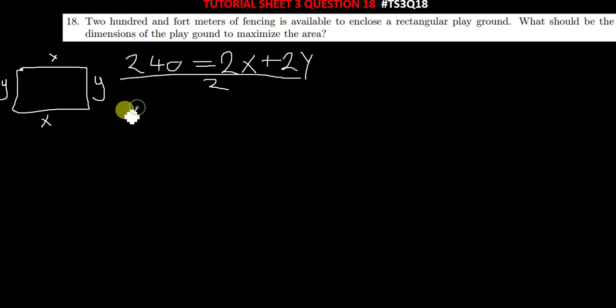So you can make y the subject or x the subject. The question is asking what should be the dimensions of the playground to maximize the area. How do you find the area of the rectangle? The area is found by length times breadth, so it's x times y. So area equals x times y.